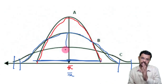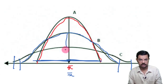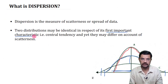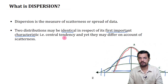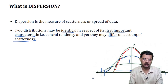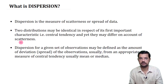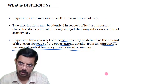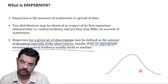All three distributions have the same measure of central tendency. Different distributions may have identical measures of central tendency but differ in scatteredness. Dispersion for a given set of observations is defined as the amount of deviation or spread of the observations from an appropriate measure of central tendency — mean or median.